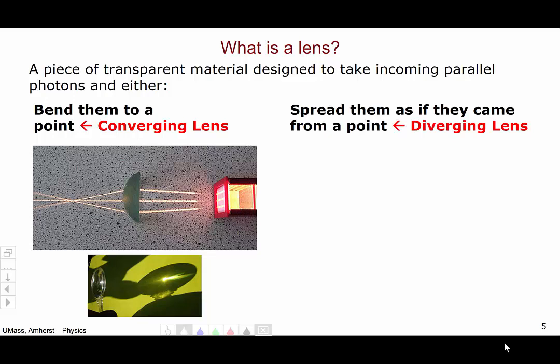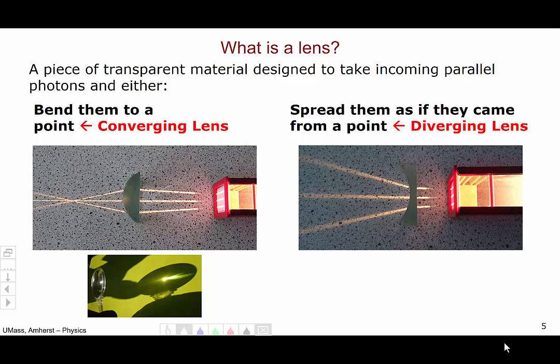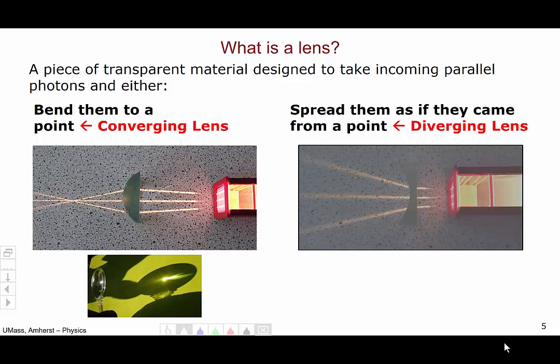Now, the other thing a lens can do is spread incoming parallel photons as if they came from a point. This is known as a diverging lens. Here is a picture of an example of a diverging lens. Now, I'm going to dim it a little bit to make things a little bit easier to see.